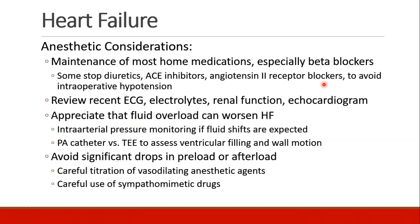How do we approach patients with heart failure for anesthesia? In general, we want these patients to take most of their home medications, especially their beta blockers. Some clinicians will have them stop their diuretics and especially ACE inhibitors and angiotensin 2 receptor blockers because these drugs can lead to intraoperative hypotension. We want to review their recent EKG, make sure their electrolytes are normal, check renal function, and see their latest echocardiogram to know the severity of their heart failure.